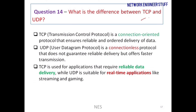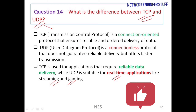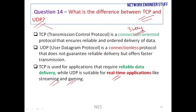Question number 14: what is the difference between TCP and UDP? Whenever you require reliable data delivery, you use TCP. Wherever you require real-time applications like streaming and gaming, you use UDP. TCP is a connection-oriented protocol with a three-way handshake, which ensures reliable and ordered delivery of data. UDP is a connectionless protocol with no guarantee that data will be delivered.